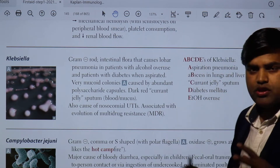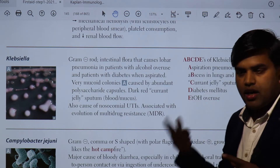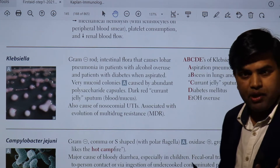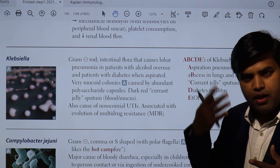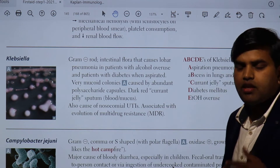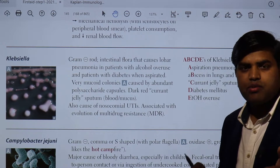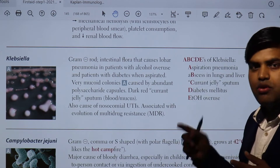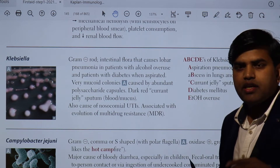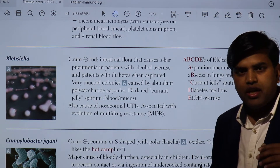We previously covered E. coli in detail: it causes UTI — cystitis and pyelonephritis — with virulence factors including pili or fimbriae. The encapsulated form causes pneumonia and meningitis. Endotoxin (lipopolysaccharide) causes endotoxic shock. Exotoxins include heat-stable and heat-labile toxins causing traveler's diarrhea, and verotoxin from enterohemorrhagic E. coli causes hemolytic uremic syndrome via hemorrhagic diarrhea. E. coli is a very important bug found everywhere.